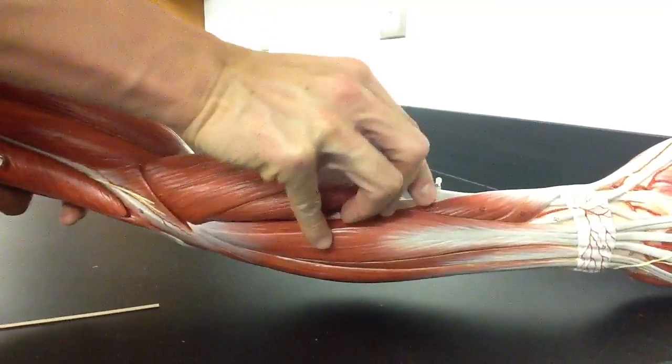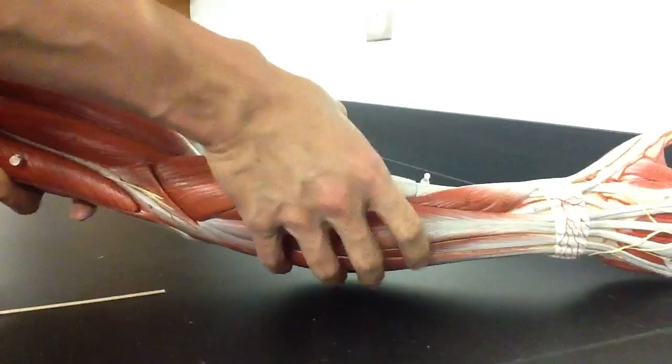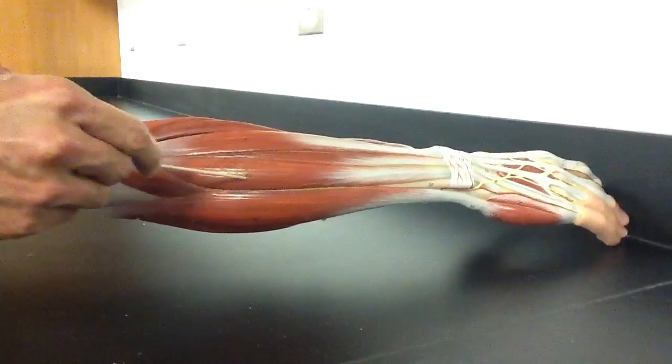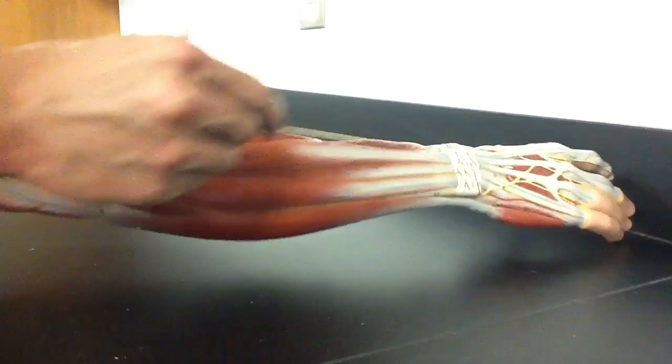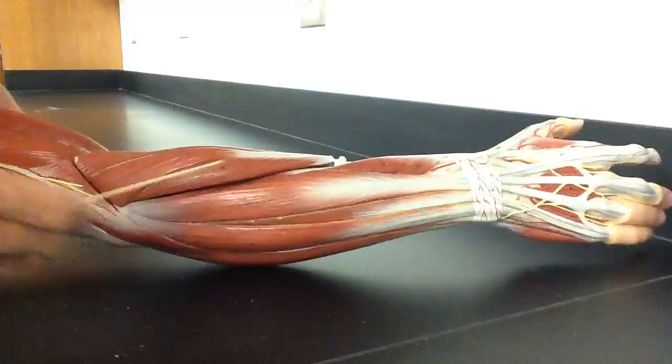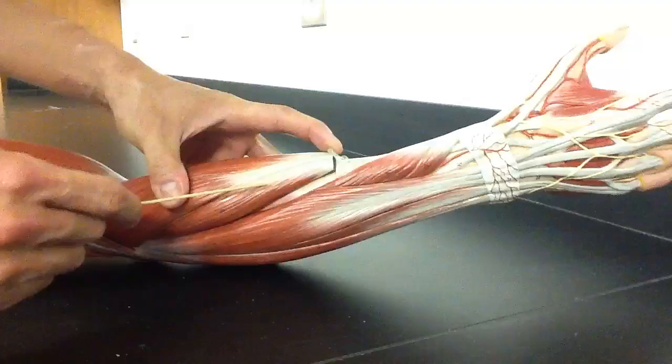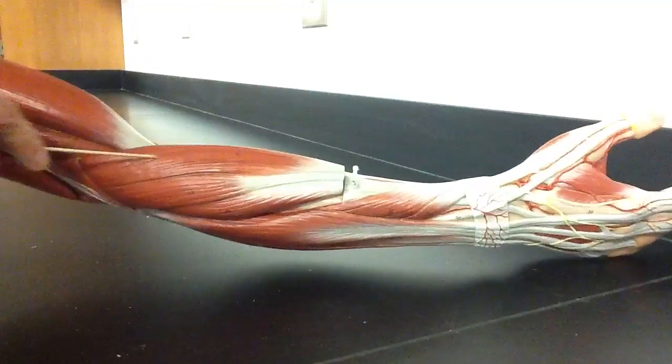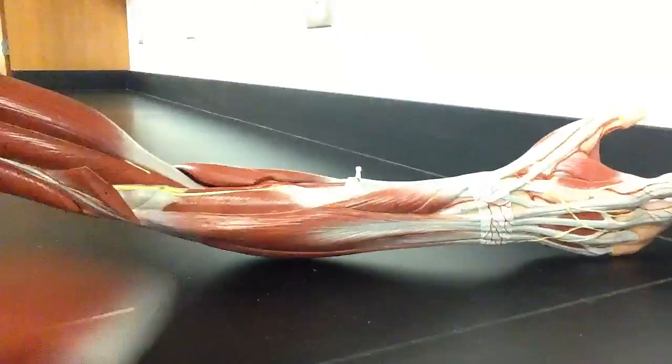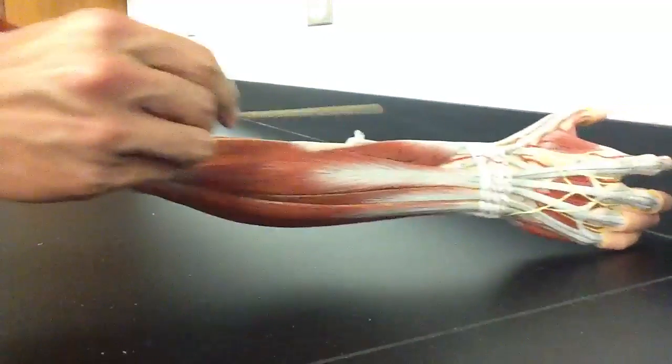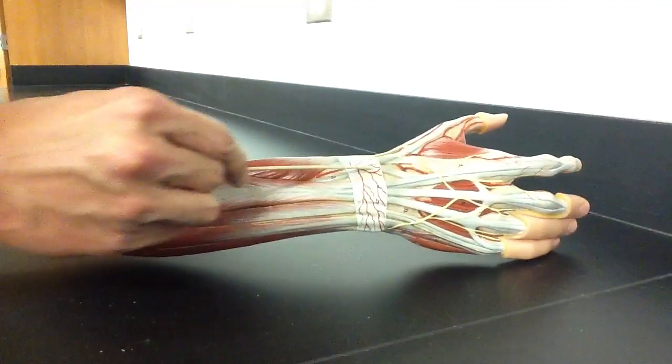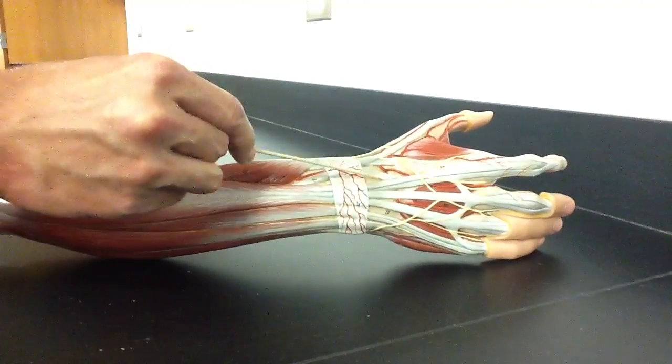Start from the very beginning and go straight through. So starting from the ulna. This is the extensor carpi ulnaris. The extensor digiti minimi. The extensor digitorum. The extensor carpi radialis brevis. Extensor carpi radialis longus. Brachioradialis. Pull this apart. Supinator. Abductor pollicis longus. Extensor pollicis brevis. Extensor pollicis longus. And extensor indicis. Those are our muscles.